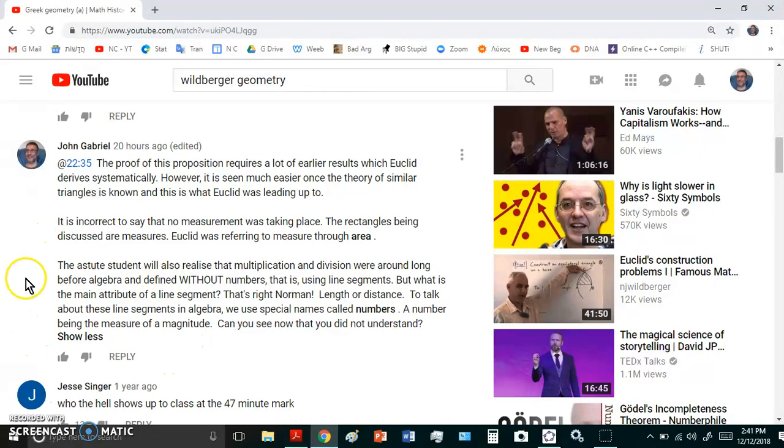That is, using line segments. Just stop and think about that. The operations of multiplication and division, as well as subtraction and addition, were defined without numbers using magnitudes in the form of line segments. But what is the main attribute of a line segment? That's right, it is a length or a distance. So to talk about line segments in algebra, we use special names called numbers. So if we say two lines are in the ratio of 5:3, we're referring to those lines by the names 5 and 3. A number is the measure of a magnitude. A number describes the measure of a magnitude. I was the first in human history to well define number. Wildberger has never understood what is a number. Neither has any other academic after Euclid or before me. I was the first.